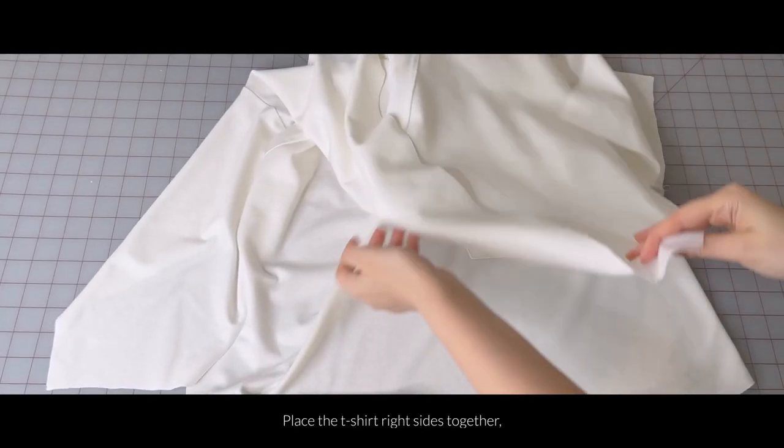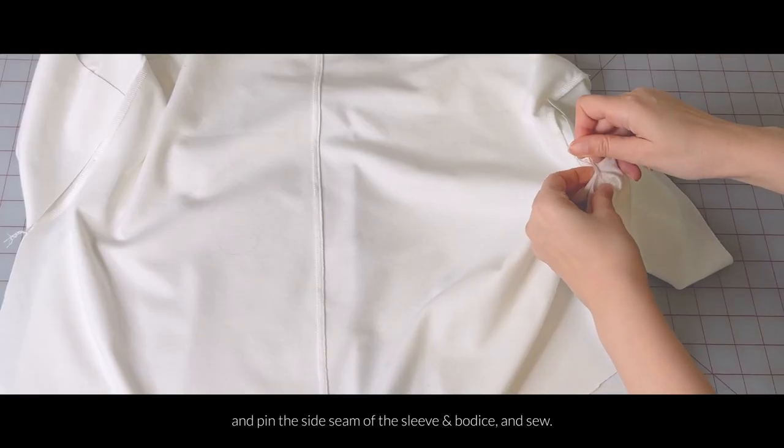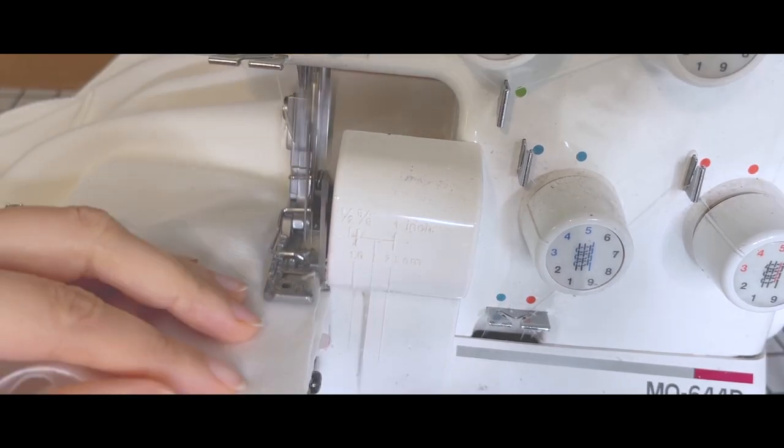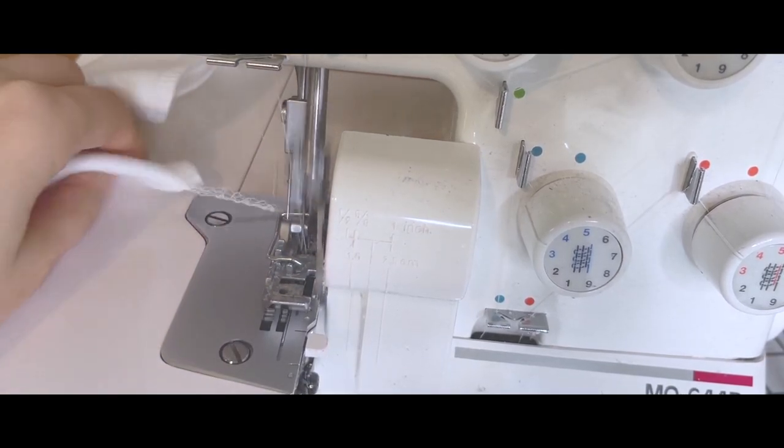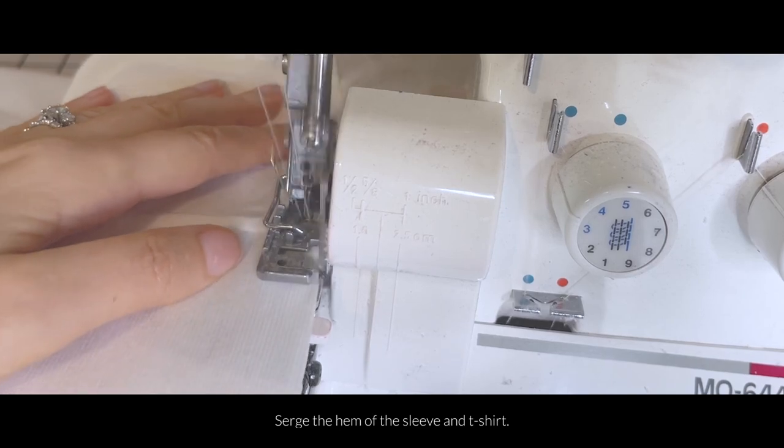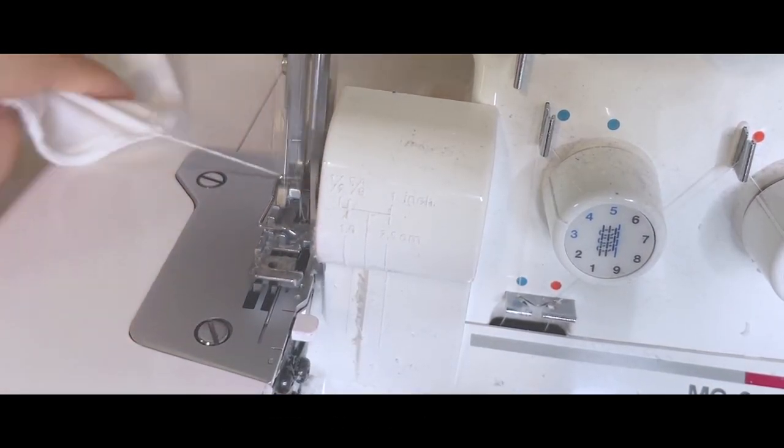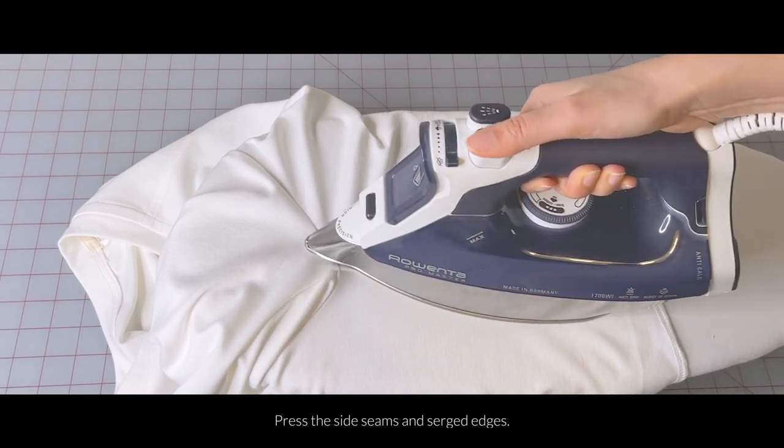Place the t-shirt right sides together and pin the side seam of the sleeve and the bodice and sew. Serge the hem of the sleeve and the shirt. If you're using a cover stitching machine for the hem, you can skip this step. Press the side seams and the serged edges.